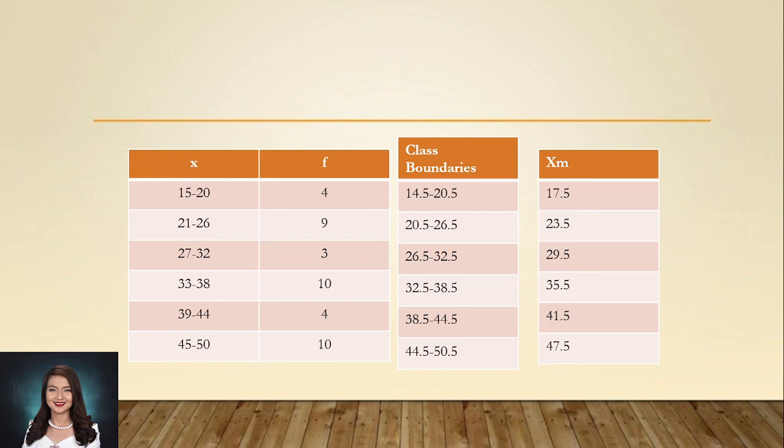The scores expressed in frequency distribution can be more meaningful and easier to interpret when graphed. Methods of graphing frequency distribution include bar graph or histogram, frequency polygon, and smooth curve. Bar graph or histogram and frequency polygon will be discussed in the next video. See you, sweeties! Thank you for watching!